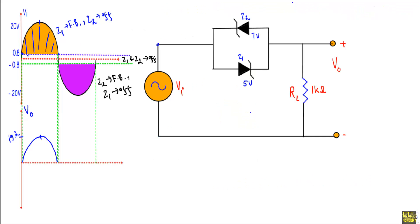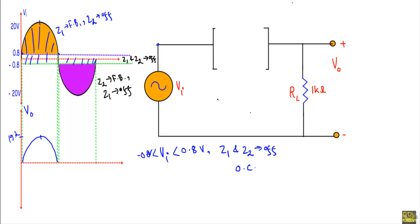Now consider the portion of applied voltage between −0.8 volt and +0.8 volt. In that case both Z1 and Z2 are in off state, so we replace both with open circuits. With both diodes open, there will be no current flow — i in the circuit equals zero. Since output voltage vo equals i·RL, and i equals zero, the output voltage will be equal to zero in this region.